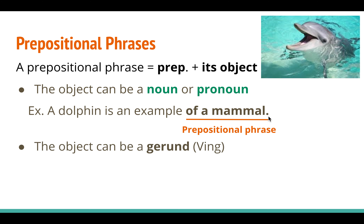A prepositional phrase can also have an object that is a gerund. A gerund means verb plus '-ing' — like 'doing,' 'playing,' or 'seeing.' A gerund looks like a verb, but it's actually not a verb; it's a noun. That's why the object can also be a gerund, which is actually a noun.